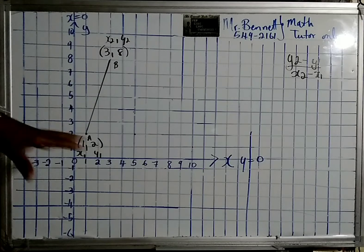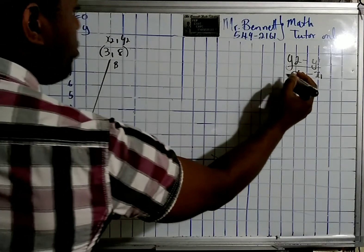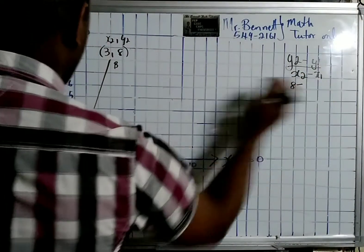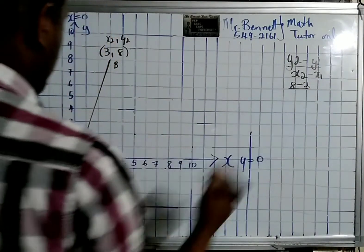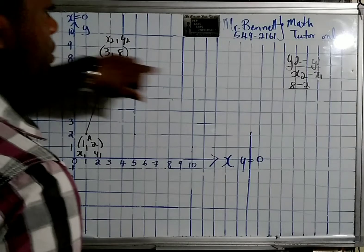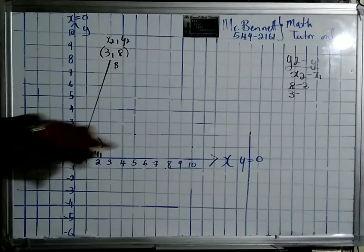Let us look at what is x2, y2. So y2 would be 8 minus y1 which is 2, divided by x2 which is 3, so it's 3 minus 1.